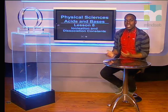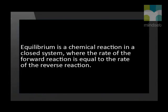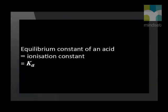Hello Grade 12s. Our series is about acids and bases, and in today's lesson we will focus on the ionization and dissociation constants. We have previously learned that equilibrium is a chemical reaction in a closed system where the rate of the forward reaction is equal to the rate of the reverse reaction. Acid-base reactions can also experience equilibrium when the acid-base reaction is taking place in a closed system.